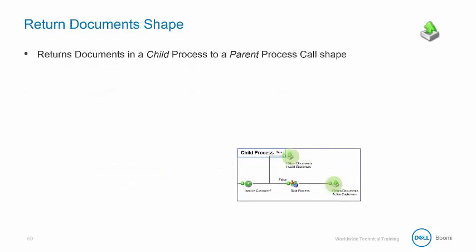In conjunction with the process call shape, there is a return documents shape which returns documents in a child process back to the parent process call shape. This will wait for and return the documents as a group to the parent process call shape.